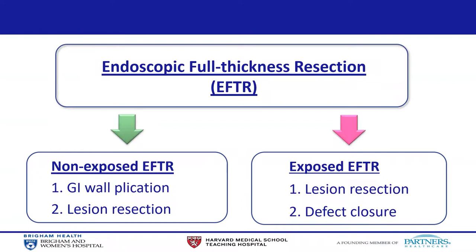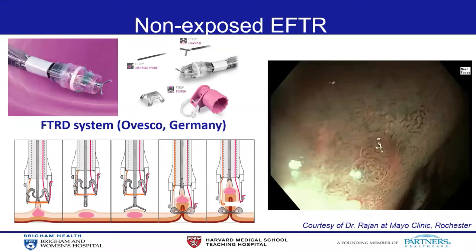Currently, EFTR — endoscopic full-thickness resection — is subclassified into two categories: non-exposed EFTR and exposed EFTR. In non-exposed EFTR, the GI wall is plicated in a full-thickness fashion first, followed by lesion resection. In exposed EFTR, the lesion resection is performed in a full-thickness fashion using ESD devices, exposing the GI lumen to the peritoneal cavity. Following resection, the defect is closed using an endoscopic suturing device or endoclips with sutures.